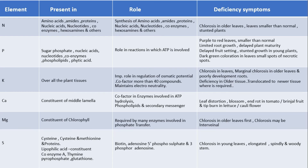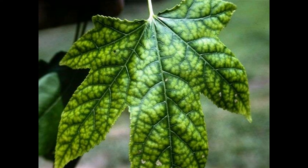Magnesium is a constituent of chlorophyll, so it is present in chlorophyll. Its role is that it is required by many enzymes involved in phosphate transfer. Deficiency symptoms: chlorosis in older leaves first. Chlorosis may be interveinal — meaning chlorosis is present between the veins of leaves.